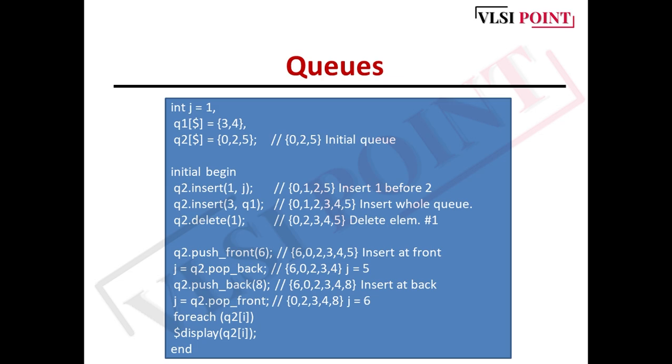q2.insert(1, j). We are inserting this j at one index, at first index we are inserting this jth value. Value of j is 1. So we are inserting 1 at first index. The updated value of q2 will be {0,1,2,5} because we have inserted 1 at first index. The next line is q2.insert(3, q1). We are inserting q1 at third index. The updated value of q2 will be {0,1,2,3,4,5}. This entire q1 will be inserted at the third index. You can see how you can insert a single value and how you can insert an entire queue into another queue.